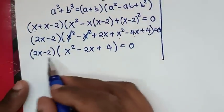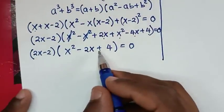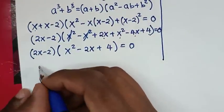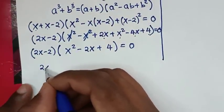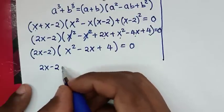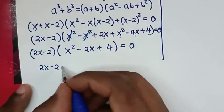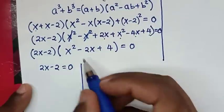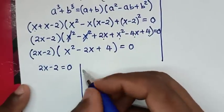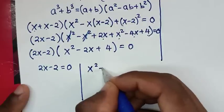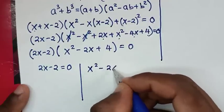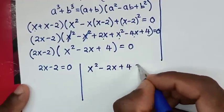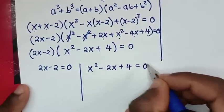From here we have two solutions. The first is 2x minus 2 equals 0, and the second is x squared minus 2x plus 4 equals 0.